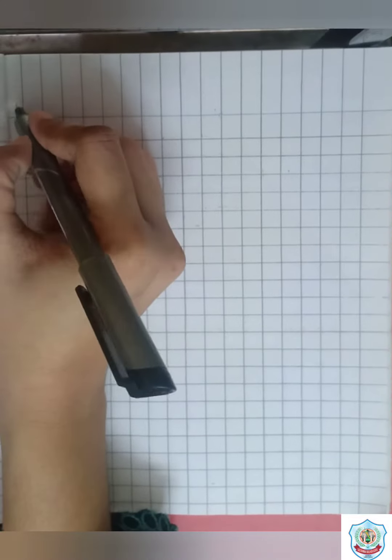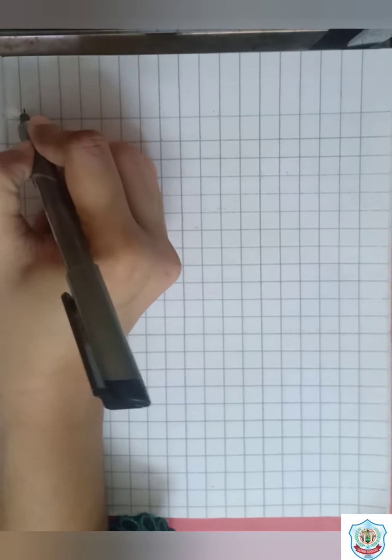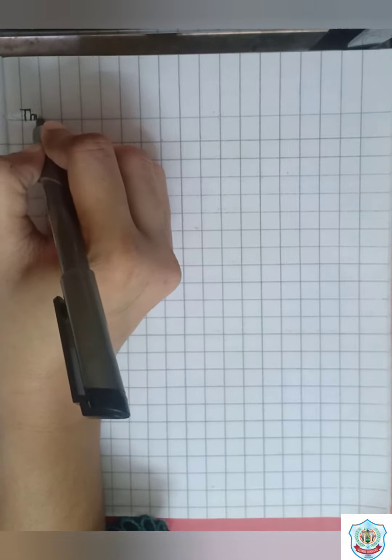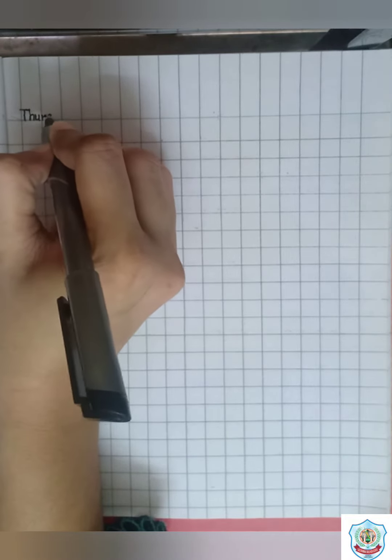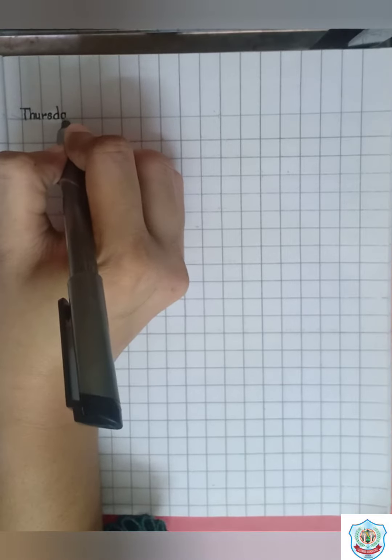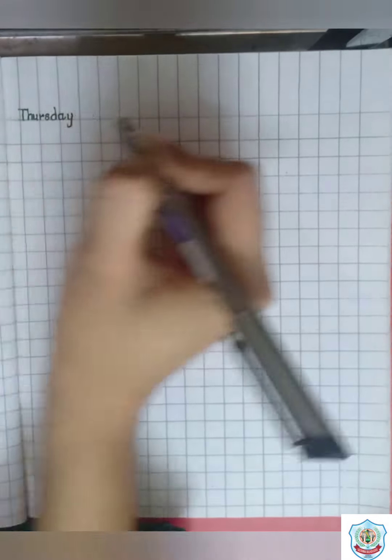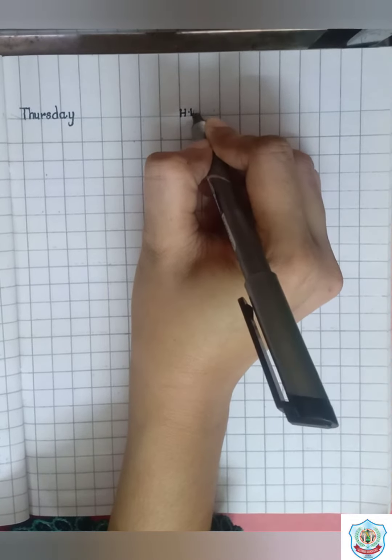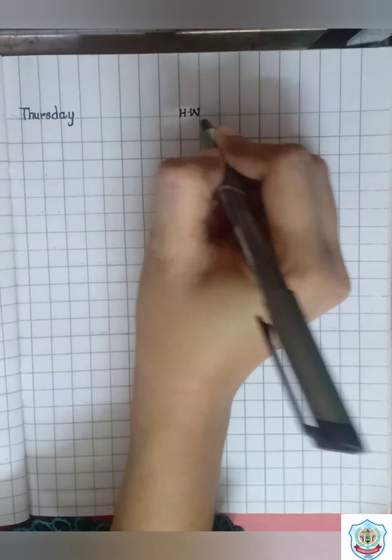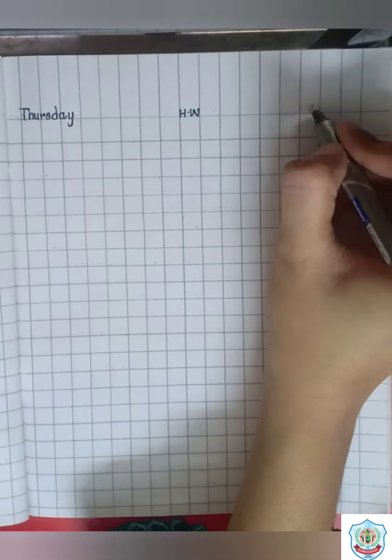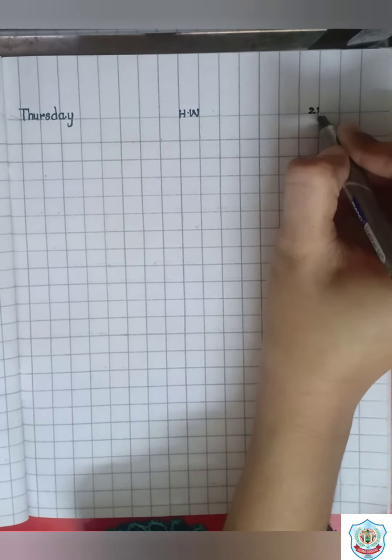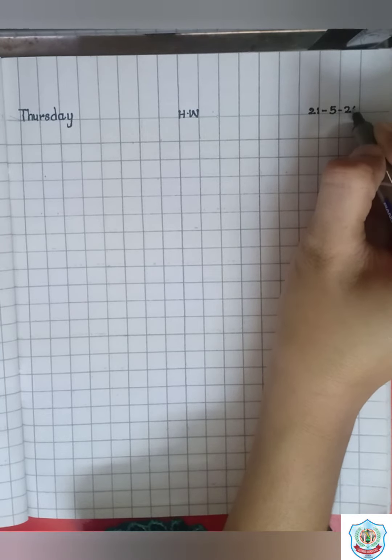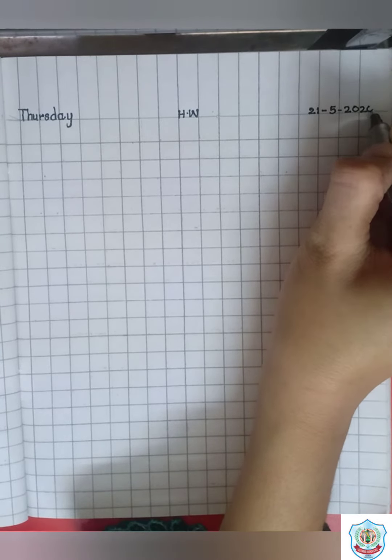What is day today? It's Thursday. T-H-U-R-S-D-A-Y Thursday. Write H-W here. H-W. Now mention date here. 21-5-2020. 21 May 2020.